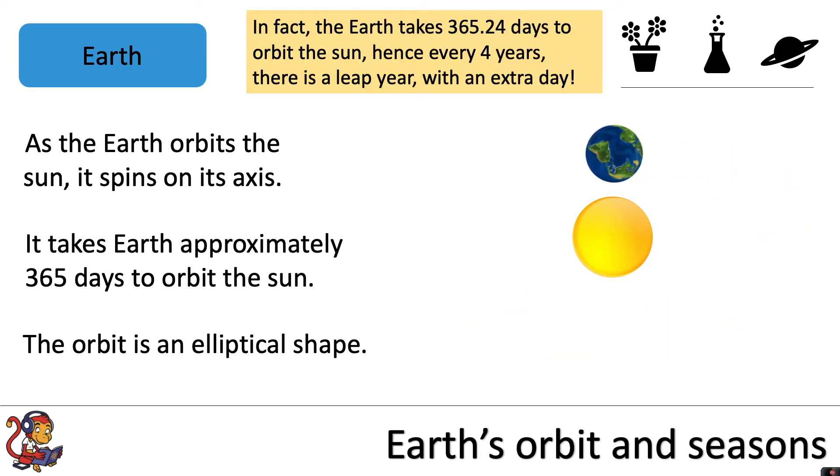In fact, the earth takes 365.24 days to orbit the Sun. Hence every four years there is a leap year with an extra day.